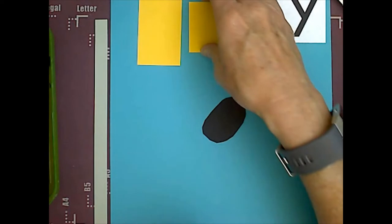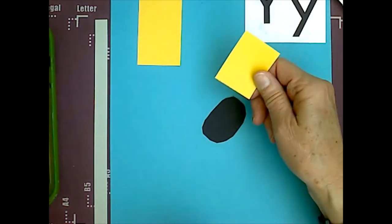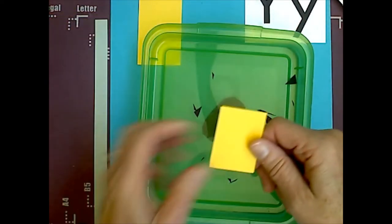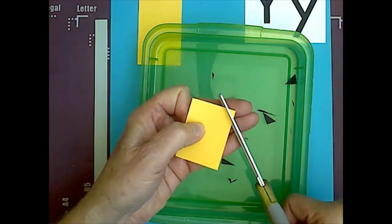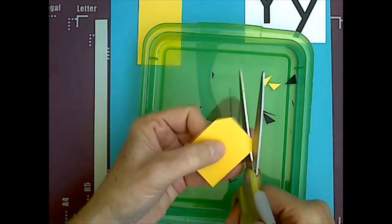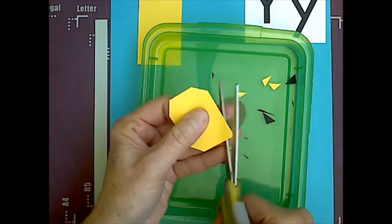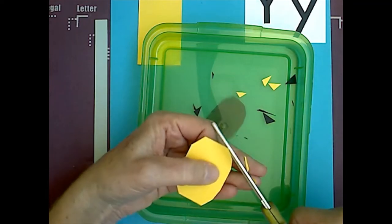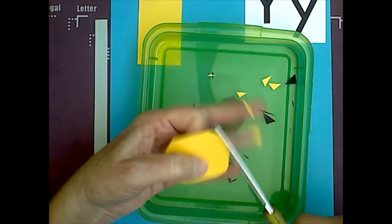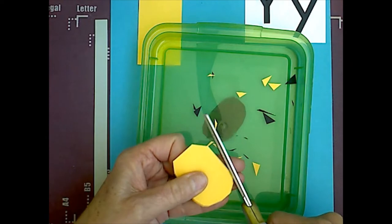Now, the next piece we are going to use is the smaller yellow rectangle, and we are going to do the same thing. Cut all four corners, and magic cut that. So, hopefully, it looks kind of like an oval when we are done.